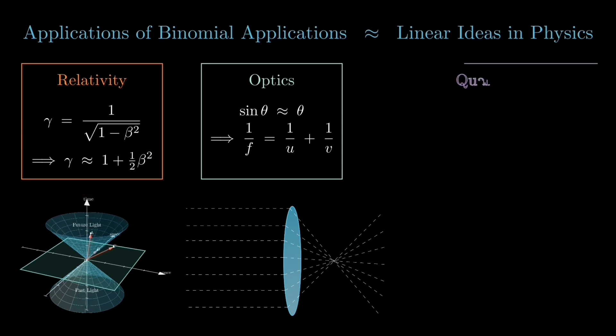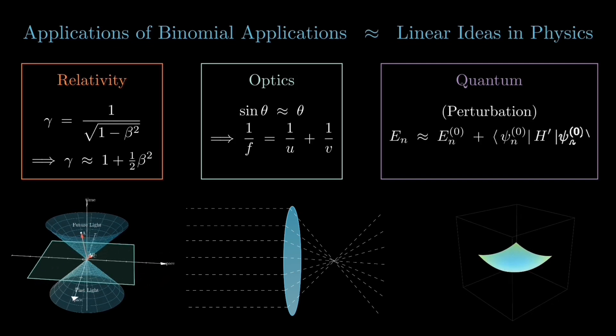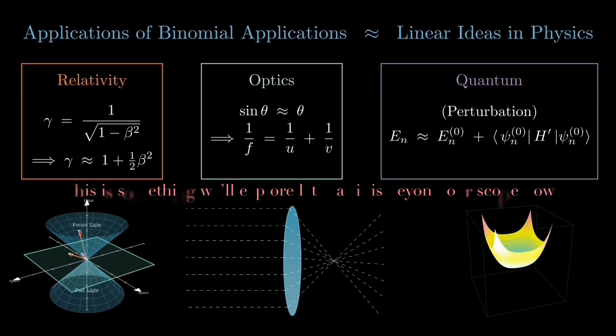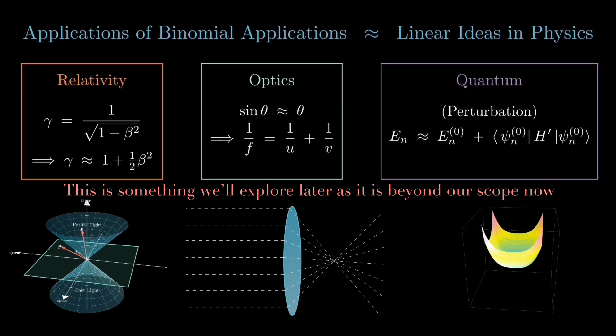Now lastly, let's consider quantum mechanics. So the binomial approximation here helps simplify expressions in perturbation theory, for example, when expanding square roots while estimating energy shifts in slightly disturbed systems.